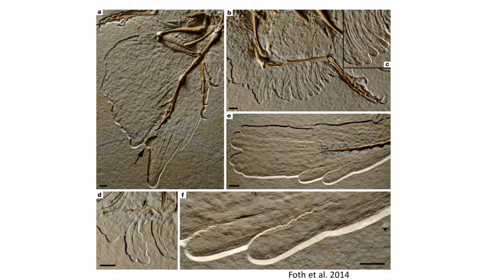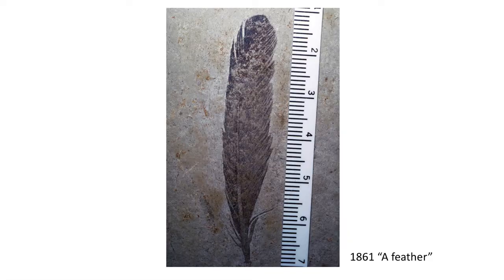Now let's look at derived, or new, traits found in Archaeopteryx that unite the fossil with living birds. There are five traits to feature. The first trait is all those feathers, and these feathers do not resemble the dinosaur fuzz we have seen so far. These feathers are held together with barbs and are pinnate, forming out of a keratin rachis, and are asymmetrical to facilitate lift and drag for active flight.